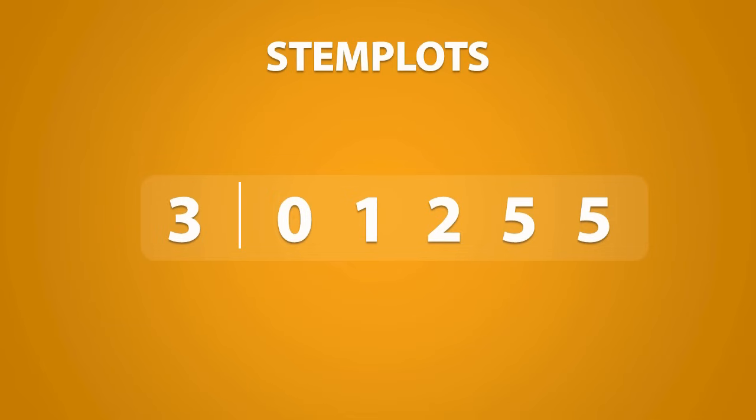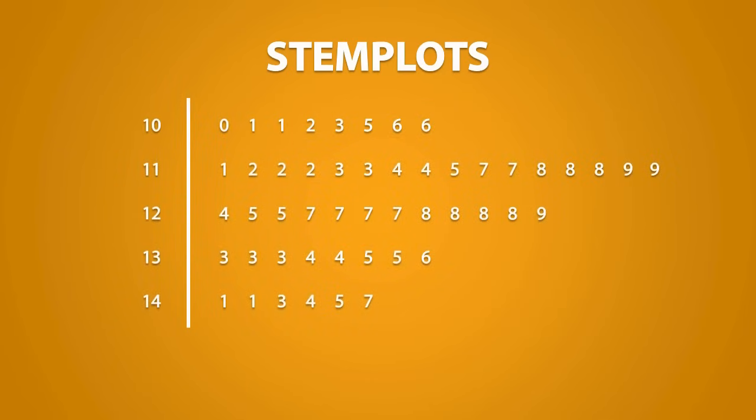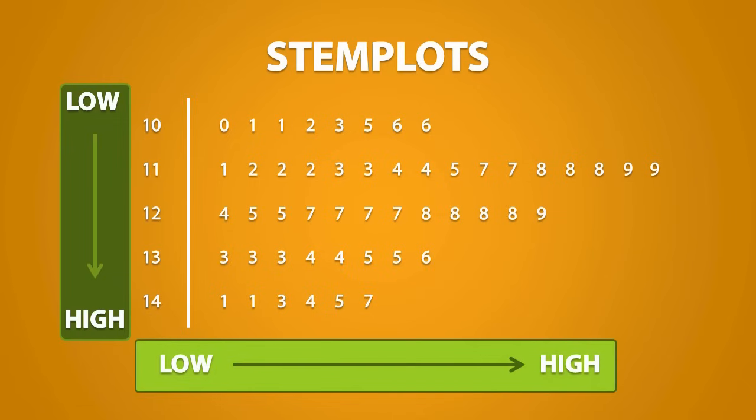Now when we have a string of leaves like this, it just means that I have the data points 30, 31, 32, 35, and 35. Notice how stem plots are constructed. Stems go down from low to high, and leaves extend outward from low to high.